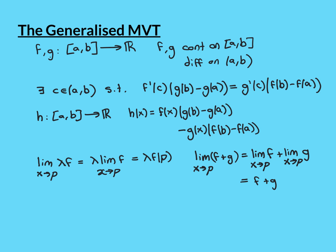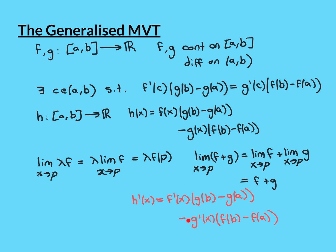We can therefore conclude that at every point where f and g are both differentiable, h is also going to be differentiable. Since they're both differentiable everywhere on the open interval (a, b), h will also be differentiable everywhere on (a, b). So writing that out: h is differentiable everywhere on this interval, and h'(x) equals f'(x) times g(b) minus g(a), minus g'(x) times f(b) minus f(a). Just basic differentiation applied here.